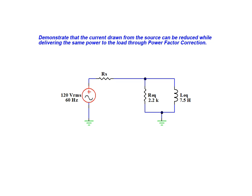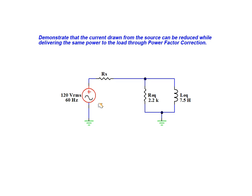Our circuit for this demonstration consists of an inductive load and an AC sinusoidal source. The resistor labeled RS in this circuit represents internal resistance for the source.